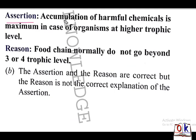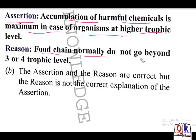Question number 3 assertion: accumulation of harmful chemicals is maximum in organisms at higher trophic levels. This process is known as biological magnification — as trophic level increases, concentration of toxic chemicals increases. Reason: food chains normally don't go beyond three or four trophic levels. Both assertion and reason are correct, but the reason is not the correct explanation of the assertion. Answer will be B.